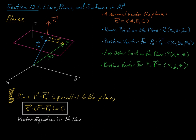A point p is in our plane if and only if the difference vector r minus r0 is orthogonal to the normal vector n, which is true if and only if this dot product equals 0. This defining equation describes all points p in our plane, and we call this the vector equation for the plane.